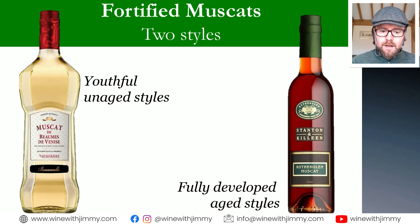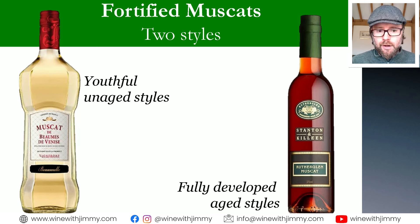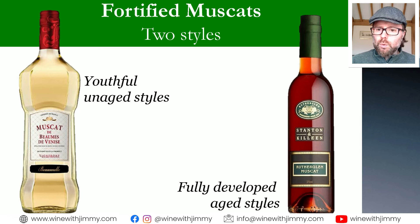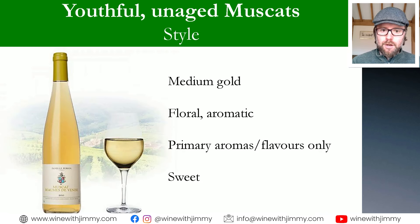We have two major groups of styles for this level of qualification. On the left-hand side, those that are more youthful and unaged — like Muscat Beaumes-de-Venise given as the example — and on the right-hand side, the more fully developed and aged styles, such as Rutherglen Muscat. You'll see a clear aesthetic difference: the youthful and unaged is a medium gold appearance, while the fully developed aged style is a brown-amber colour, giving you the difference between the youthful versus the more oxidative expression.